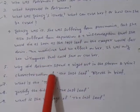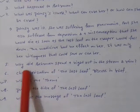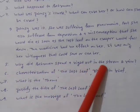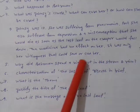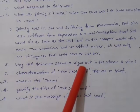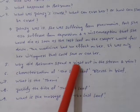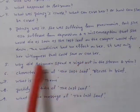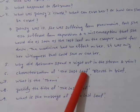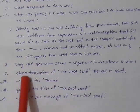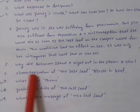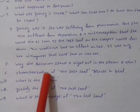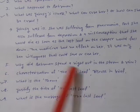Why did Behrman spend a night out in the storm and rain? He spent the night out in the storm and rain to paint a leaf on the wall, to convince Johnsy that she must stay alive. If the question is about characterization of 'The Last Leaf,' you should know there are only four characters: Johnsy, Sue, the Doctor, and Behrman — and you have to describe all of them briefly one by one.